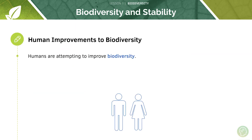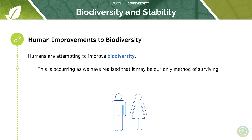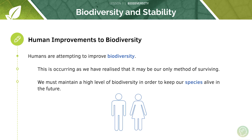Humans are attempting to improve biodiversity because we have realised it may be our only method of surviving. We must maintain a high level of biodiversity in order to keep our species alive in the future. In future tutorials, we will discuss more of the things we are doing as a species that reduce biodiversity, and the systems put in place to address this.